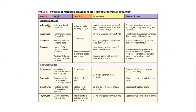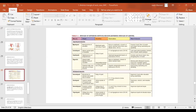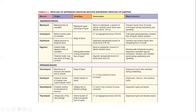This is a table. You can go through: mylohyoid, geniohyoid, stylohyoid, and digastric — these four are the suprahyoid muscles. These are the suprahyoid muscles. Then the sternohyoid, omohyoid, sternothyroid, and thyrohyoid — these are the infrahyoid muscles. For the mylohyoid, the nerve to mylohyoid supplies it. Geniohyoid is supplied by C1 via the hypoglossal nerve — cranial nerve 12. Stylohyoid is a part of the facial nerve. And the digastric — anterior belly and posterior belly — has separate nerve supply due to its different origin from the pharyngeal arches.